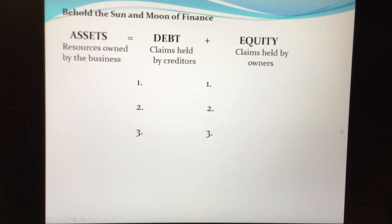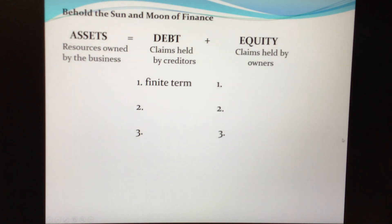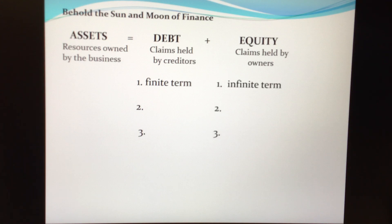First, debt is characterized by a finite term. That simply means that when you borrow money, you have to pay it back, and so there is always some sort of a deadline — a due date, a maturity date associated with debt. We don't have that with equity. Equity is characterized by having an infinite term.